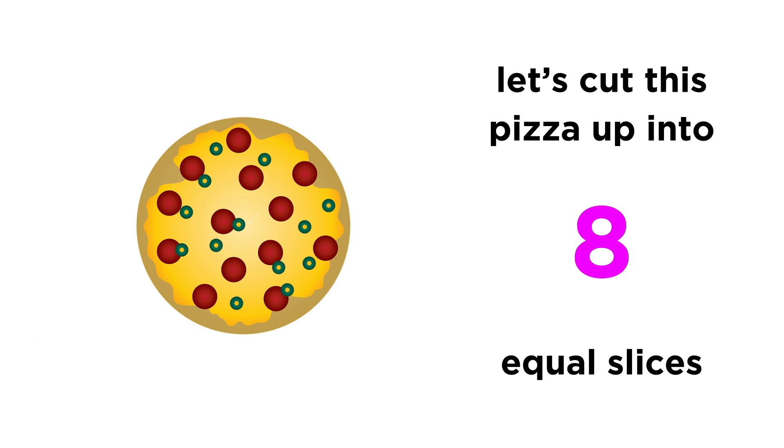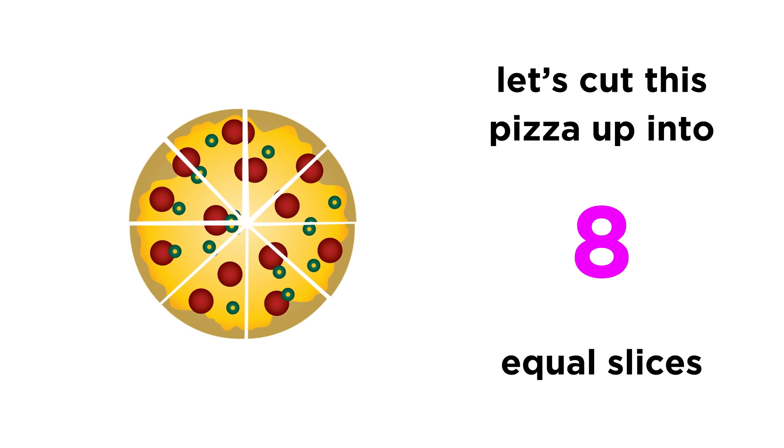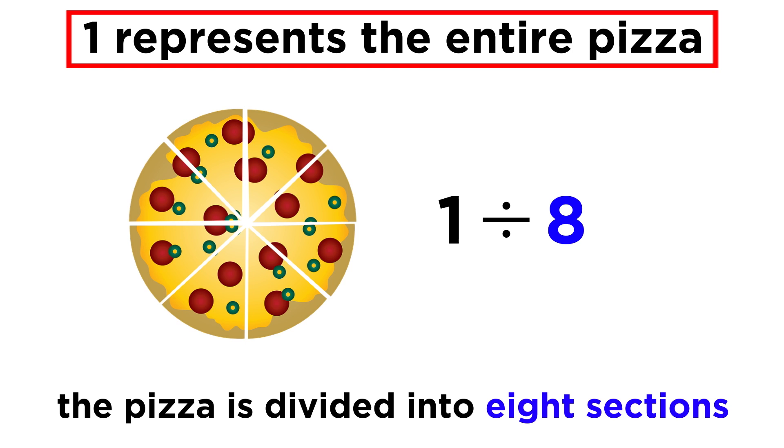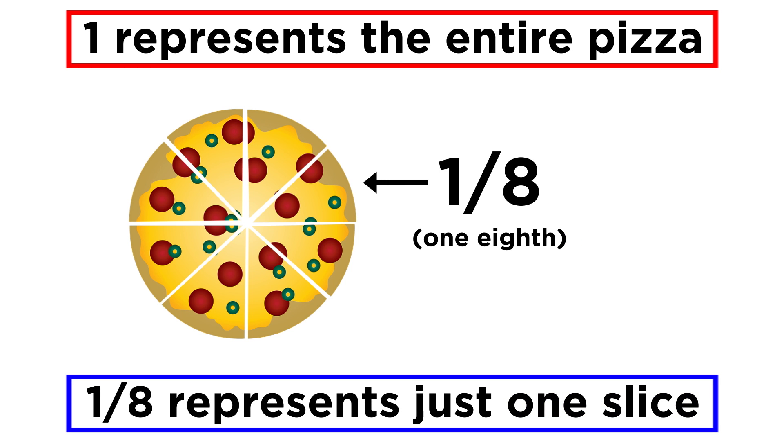To see how these work, let's look at a pizza. You'll typically see a pizza cut up into eight equal slices. To represent this, we can take the number one to represent the pizza, and divide by the number eight to show that it has been divided into eight sections. That means that each slice is one eighth of the pizza.